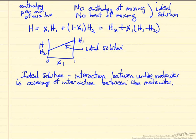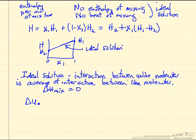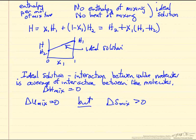So ideal solution is essentially saying there's interactions between molecules in a liquid phase, but interactions between the unlike molecules, it's just the average of interaction between the like molecules. And so delta H of mixing is 0. If we're an ideal gas, of course this is true because there's no interaction between the molecules. And likewise delta U of mixing is 0. But, important difference, delta entropy of mixing is greater than 0 for ideal solution.